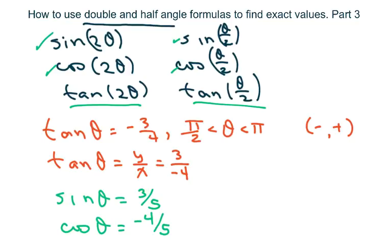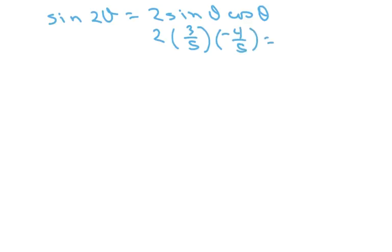We're going to find everything. We know that sine of 2 theta equals 2 sine of theta cosine of theta. So we have 2 times 3 fifths times negative 4 fifths, which equals negative 24 over 25.